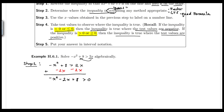Since I don't like the leading coefficient to be negative, I'll multiply through by negative one. Be careful here — when you multiply or divide an inequality by a negative, you must reverse the inequality sign. So we get positive x squared plus 2x minus 8 on the left, less than zero (since zero times negative one stays zero).